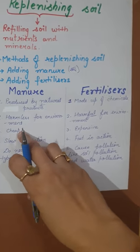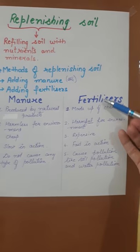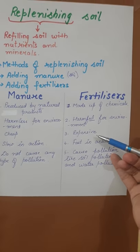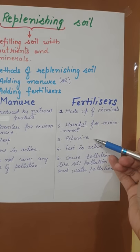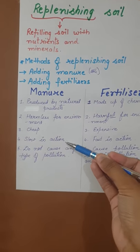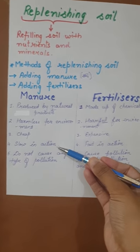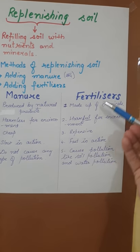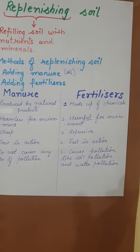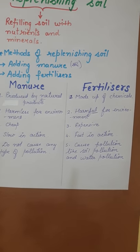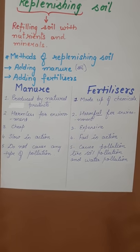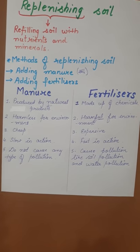Manures are cheap — they are easily available at low cost. Whereas fertilizers are quite expensive. Manures are slow in action — they are good but work quite slowly. But fertilizers are fast in action — once applied, within a few hours they dissolve in water and go into the soil.